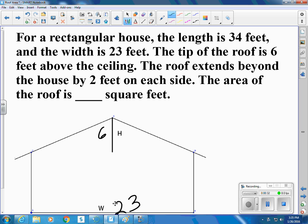The roof extends beyond the house by 2 feet. So this little distance here is about 2 feet. So let's find the area of the roof.